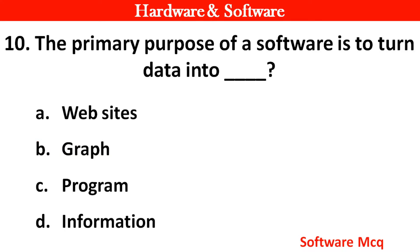Question 10: The primary purpose of software is to turn data into dash. Right answer is option D — Information.